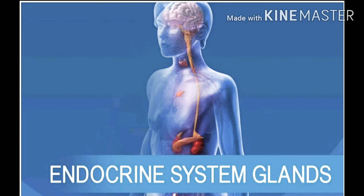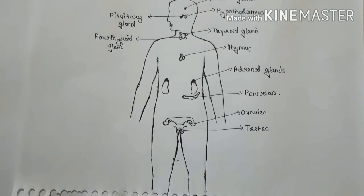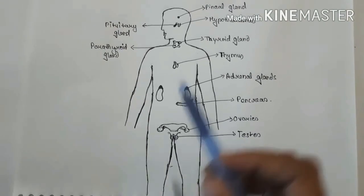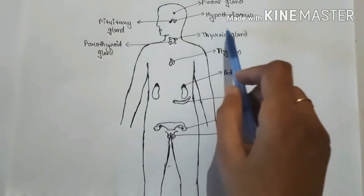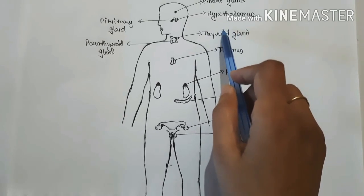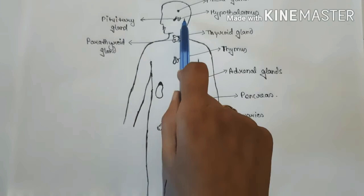Hormones can either inhibit or stimulate — that is, activate — certain functions. Some glands stimulate or inhibit other endocrine glands. For example, the hypothalamus controls the pituitary gland, and the pituitary gland in turn controls the other glands of the body. The endocrine glands present in humans include the pineal gland, hypothalamus — which is a part of the forebrain diencephalon — and the pituitary gland, which is connected to the hypothalamus.